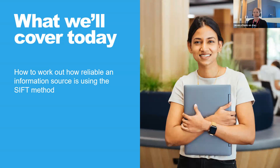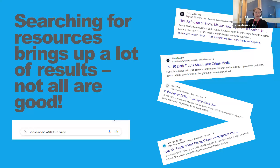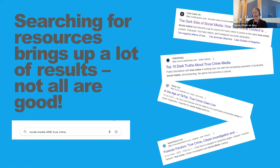What we'll cover today will be how to work out how reliable an information source is using the SIFT method. When you do a search, whether that be in library search or on Google or another search engine, it brings up a lot of different results and not all are good. Getting in the habit of evaluating resources that you find will really enable you to work out the reliability of the specific information source.